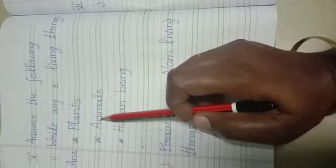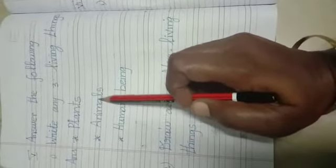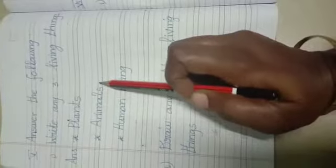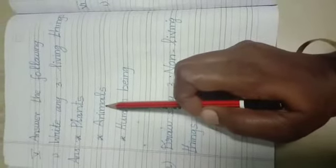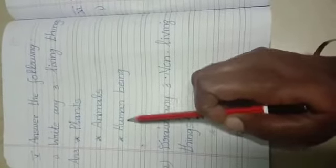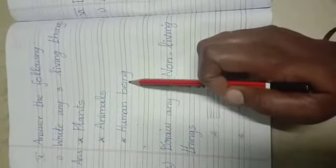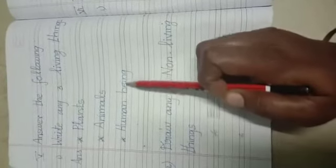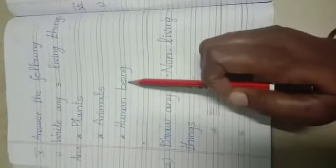And another one, animals. A-N-I-M-A-L-S. Animals. And third one, human being. H-U-M-A-N B-E-I-N-G. Human being.